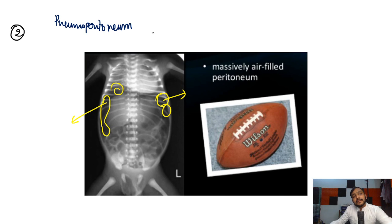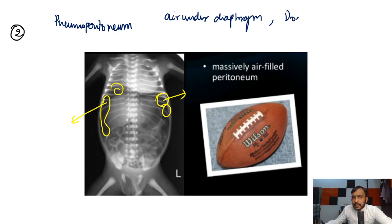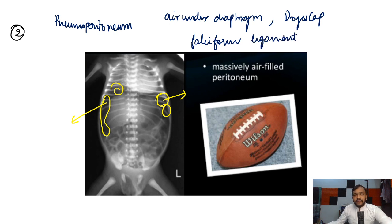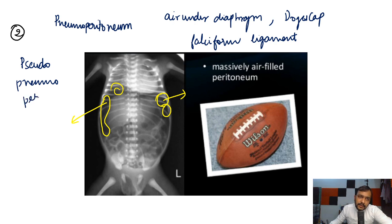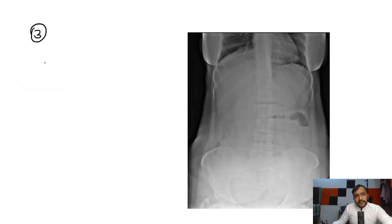You also need to know the other signs seen in pneumoperitoneum: air under the diaphragm, the Rigler's scap sign, and the falciform ligament sign. I have discussed all these signs in the detailed video on Unacademy — you can also find the PDF in my Telegram group. Do you know what pseudo-pneumoperitoneum is? Let me know in the comment section below.